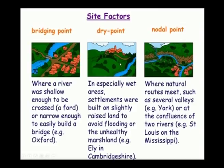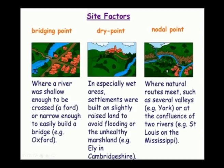The next site factor is the dry point. In especially wet areas, settlements were built on highly raised land to avoid flooding or unhealthy marshland. An example is Ely in Cambridgeshire — because of flooding that could occur, the site itself has been raised so that even during monsoon, if the river tends to flood, it will not affect the settlement. Then there is the nodal point, where natural routes meet, such as several valleys — for example York, or the confluence of two rivers at St. Louis on the Mississippi. When two rivers meet at a particular point, it could be a very fertile junction.